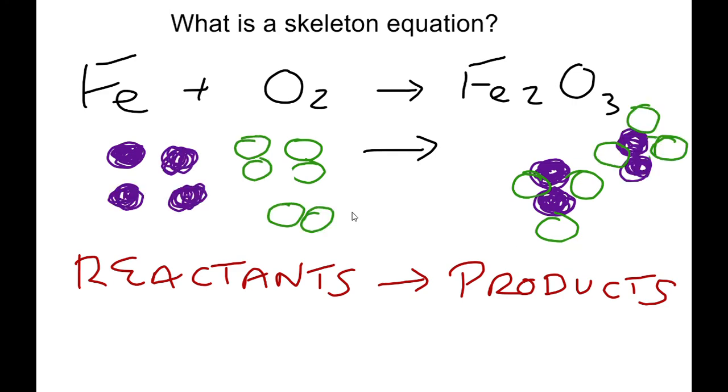The correct ratios are revealed by what we call the balanced equation. The balanced equation shows the correct quantity ratios of all reactants and products. These quantity ratios are revealed by what are called coefficients.